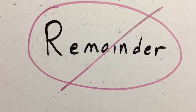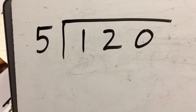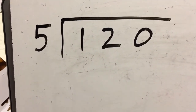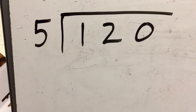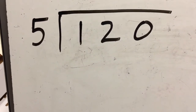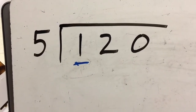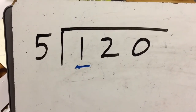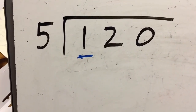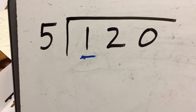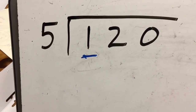Let's get started on our first example: problem number one, 120 divided by five. How many fives are in 120? You could count by fives until you get to 120, but let me show you how to do it using long division. So 120 — the first number is one. The question I'd like you to ask yourself is: how many groups of five can I get out of a group of one?